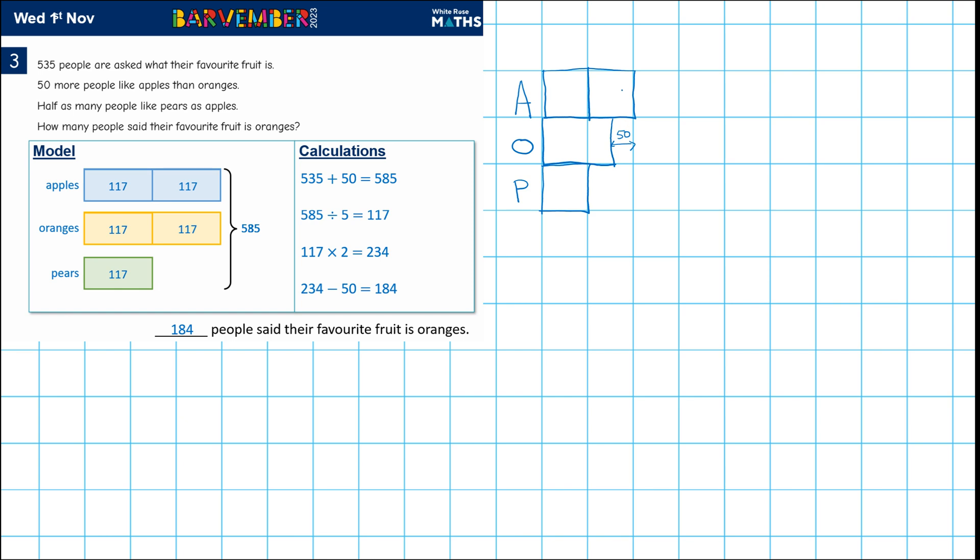if oranges had had an extra 50, if there'd been an extra 50 people in our survey, in addition to this 535 saying that they liked oranges, then oranges would have been equal to these two parts here.